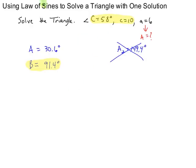I mean side B. So I will say side B over the sine of angle B equals side C over the sine of angle C. And I will solve for side B by multiplying both sides by the sine of 91.4 degrees.